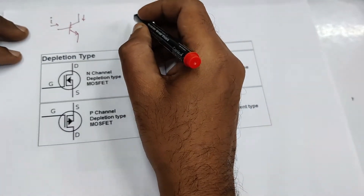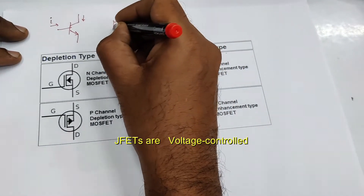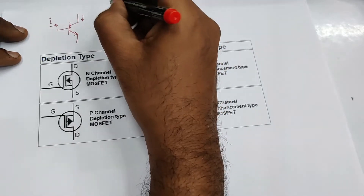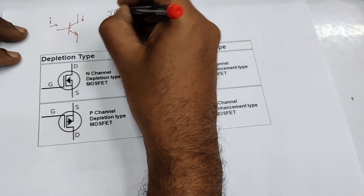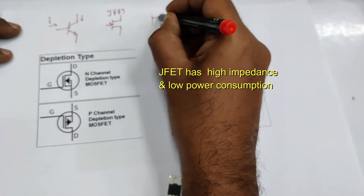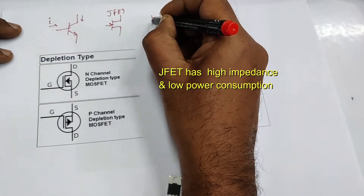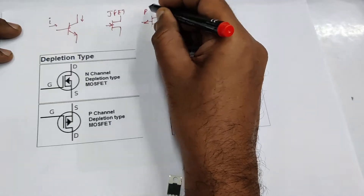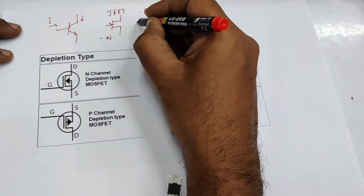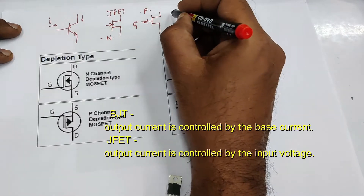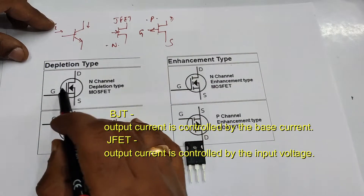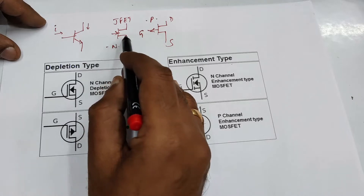Next come the JFETs — Junction Field Effect Transistors — which are voltage control devices. This FET has a very high input impedance and low power consumption, and there are N-type and P-type. The terminals are gate, drain, and source. These JFETs are only depletion type, which means when zero volts is at the gate, it operates and current flows from drain to source.